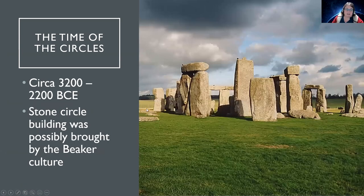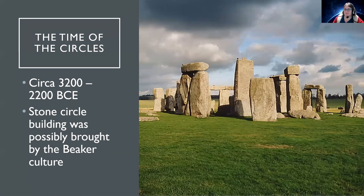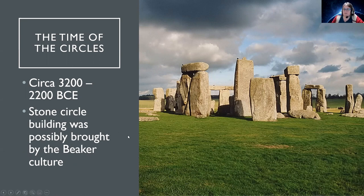After that we have the Time of the Circles, lasting from around 3,200 to 2,200 BCE. The purpose of stone circles may have varied — some may have been based on astronomical alignments. There is evidence that various stone circles in Scotland are based on lunar alignments, and it's well known that Stonehenge aligns with the summer solstice sunrise at the Heel Stone. It's possible that stone circle building was brought to Britain by the Beaker Culture mentioned earlier.